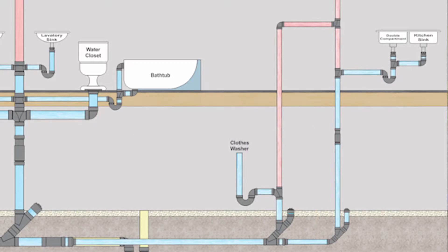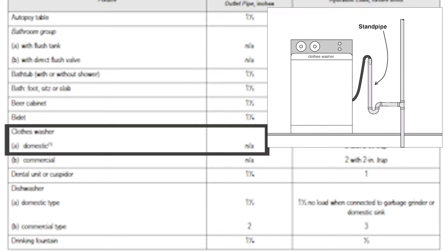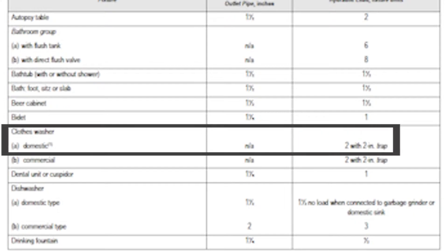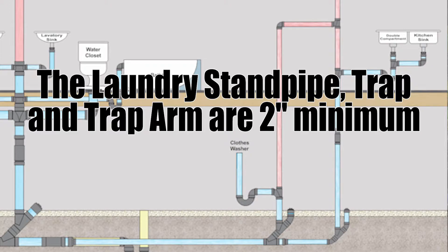The next fixture I want to look at is this clothes washer which is of domestic type. Notice the minimum size of fixture outlet pipe is NA or not applicable. That's because the manufacturer will build this pipe that comes out of the unit and it'll be of a varying size. However the hydraulic load is two fixture units if you have a two inch trap. This will have a minimum two inch trap. So this tells me that the laundry stand pipe, the trap, and the trap arm are all two inches in size.